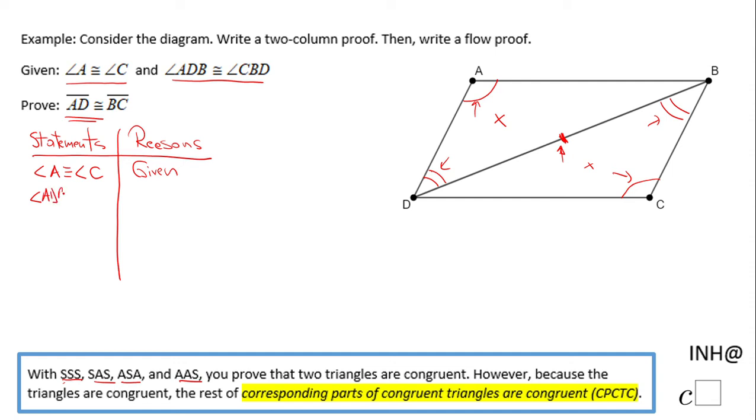Then, as I said, we have this common side in these two triangles. Side DB is in both triangles, so DB congruent to itself, DB. This property is called the reflexive property. Now, because we have this angle-angle-side pattern as I said, we can say triangle...